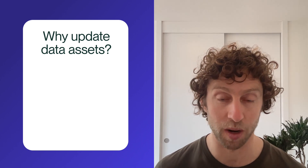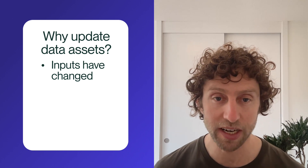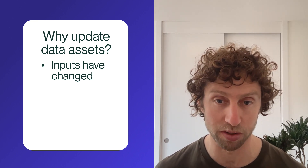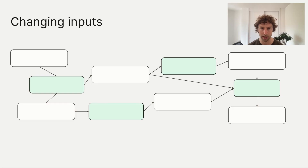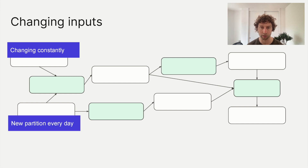In my experience, there are a couple of reasons. One is that our inputs change. Our data is derived from some upstream data, and that upstream data changes or grows, and we want to keep our downstream data up to date. Different source data changes in different ways — some changes constantly, like new orders coming in every second at an online store, and other source data changes at discrete moments, like an external vendor that delivers a file to you every day.